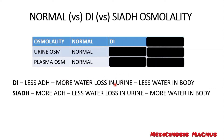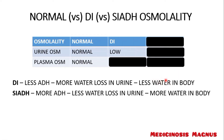In the urine compartment, more water means the electrolytes are less. Since the electrolytes are less, the urine osmolality is low. Meanwhile, since all the water is lost in urine, there is less water in the body. In the blood vessels the electrolytes are more, which is why there is high plasma osmolality in diabetes insipidus.